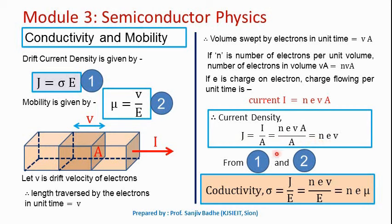From equation one, conductivity σ equals drift current density divided by electric field, which is J/E. Here J equals n·e·v, and mobility μ equals v/E, so we substitute v/E as μ. Therefore conductivity σ equals n·e·μ. This is the required relation between conductivity and mobility: conductivity is the product of electron concentration, charge on the electron, and mobility of electrons.